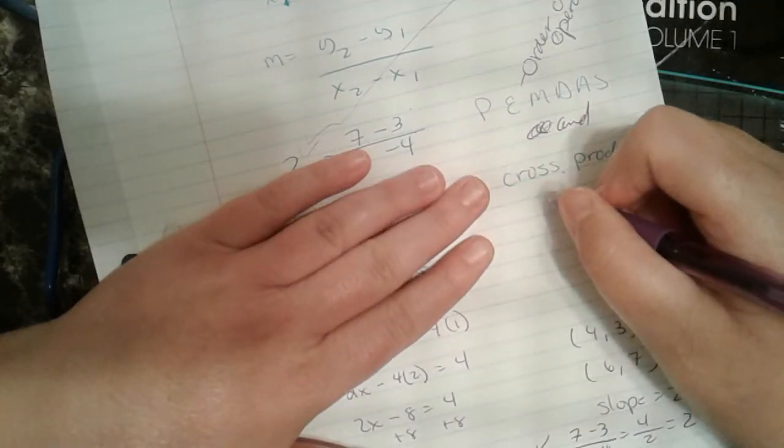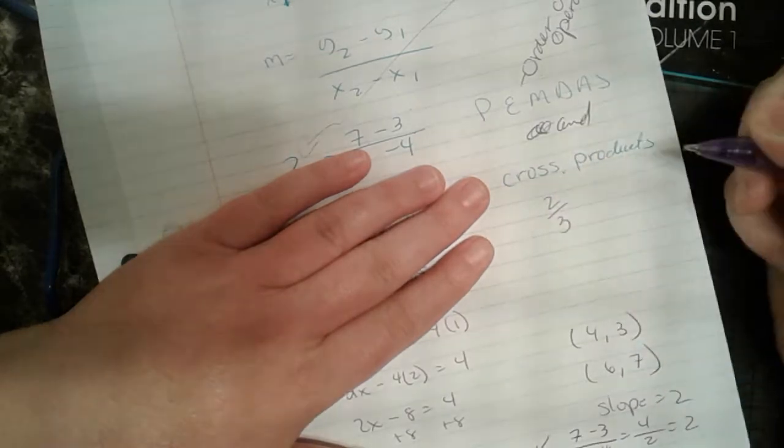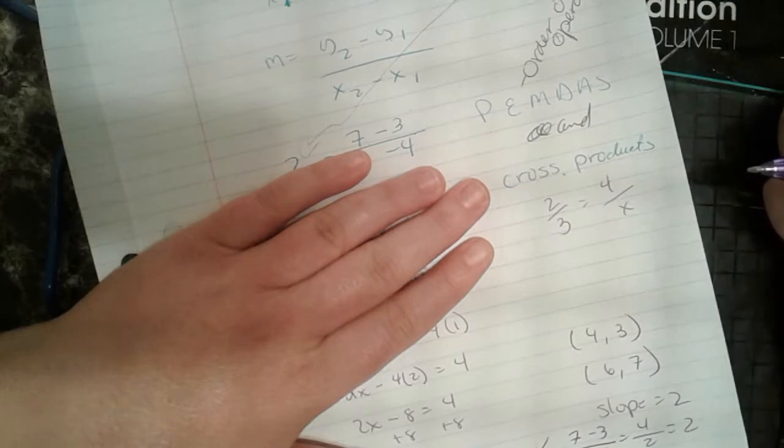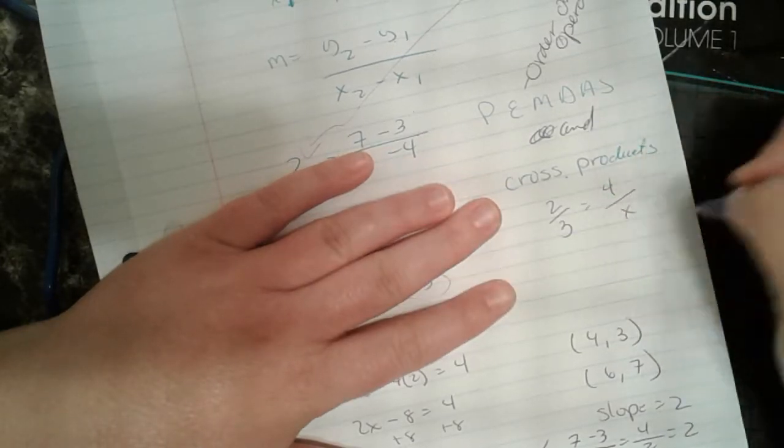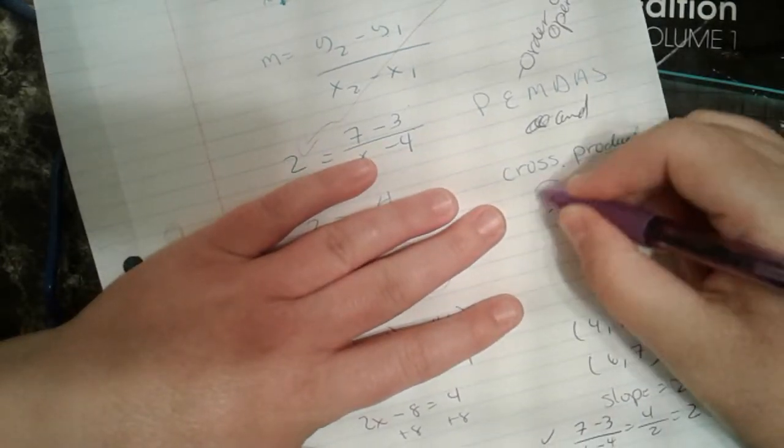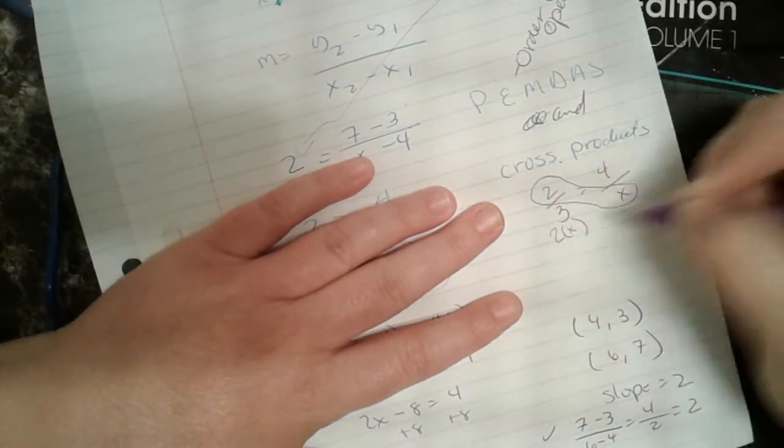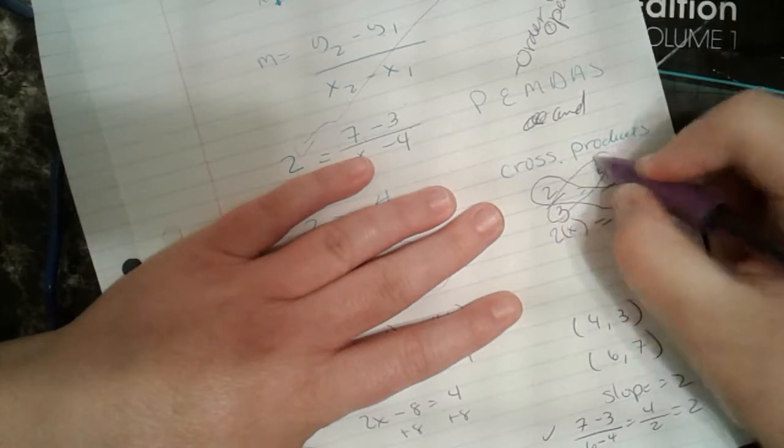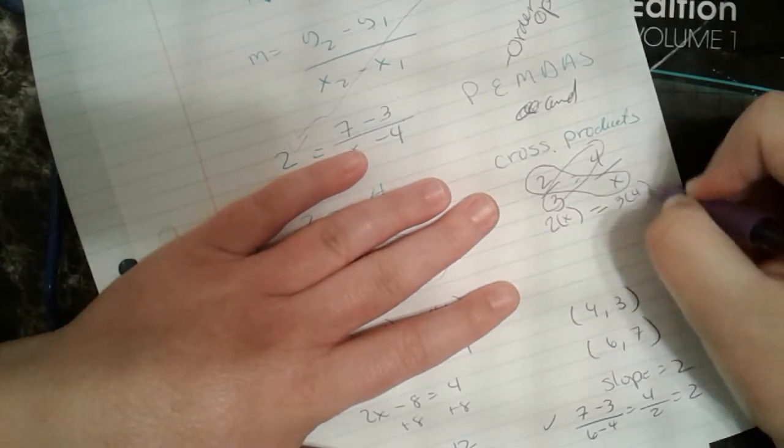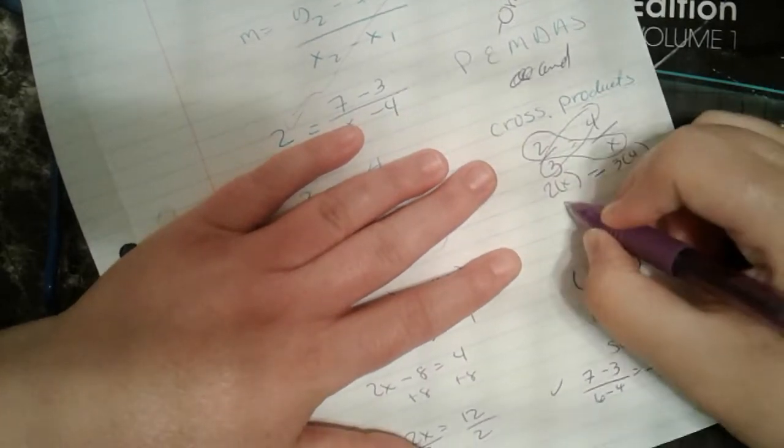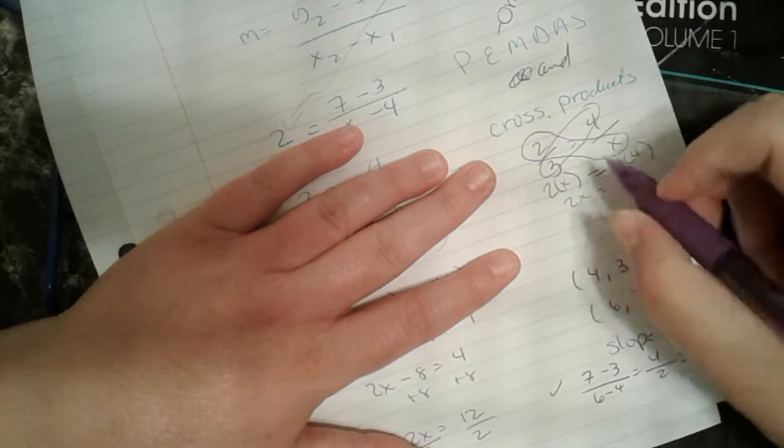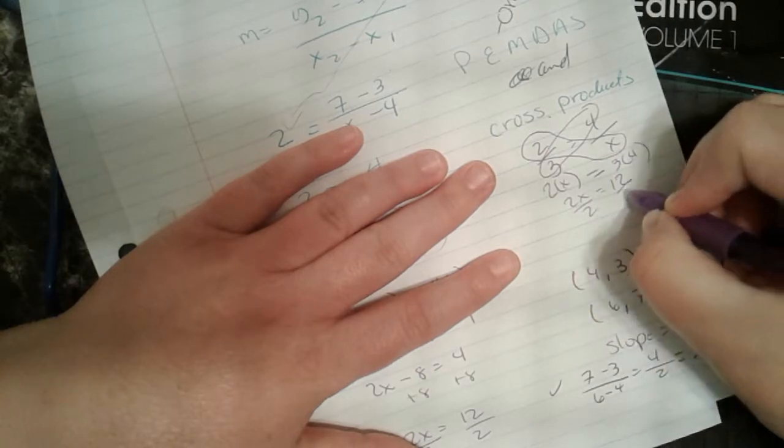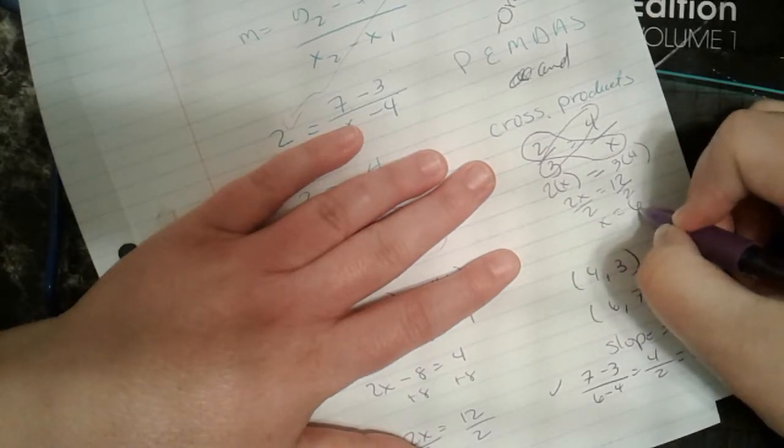So let's say if I have 2 over 3 equals 4 over x. I can figure out what x is by doing cross products. I can take 2 times x and then set that equal to 3 times 4 and 2x. And I can solve from there. So 2x equals 12. And how do I get x by itself? I can divide. So x equals 6.